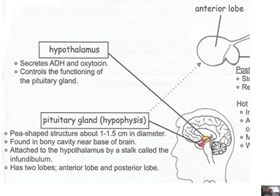The pituitary gland is a pea-shaped structure about 1.5 centimeters in diameter — absolutely tiny — and yet this whole thing regulates how your body functions. It's found in a bony cavity near the base of the brain, and it's attached to the hypothalamus by a stalk called the infundibulum.